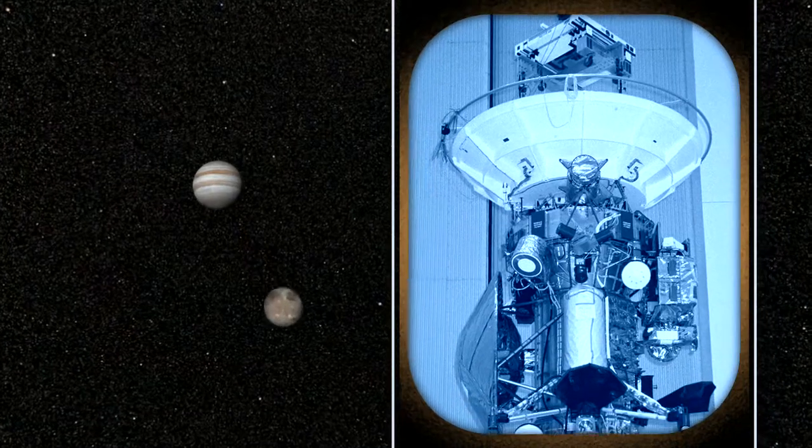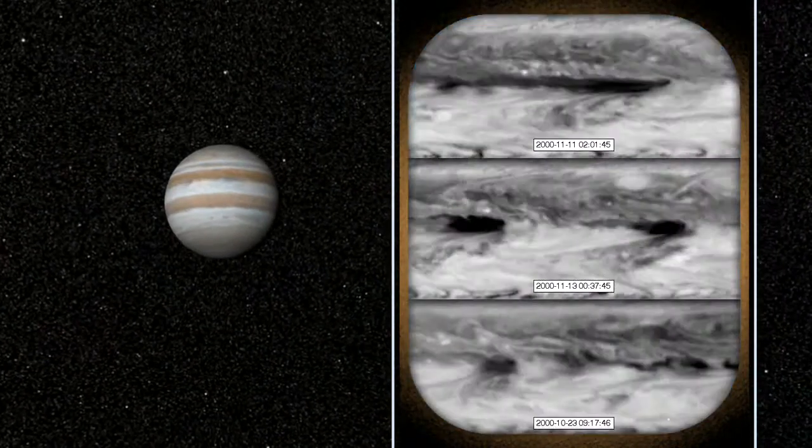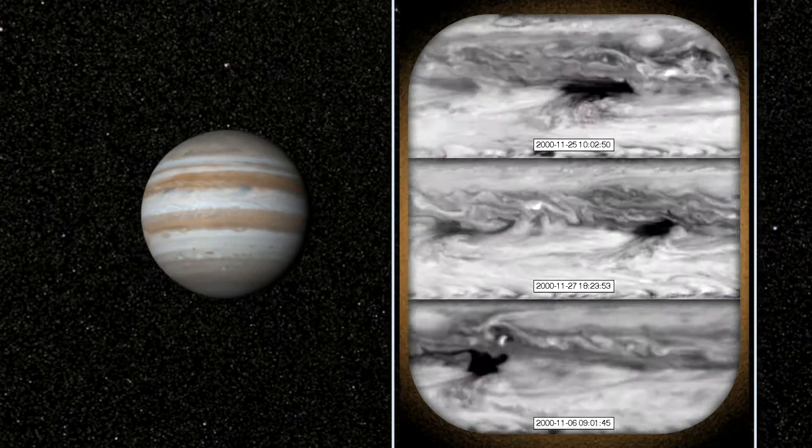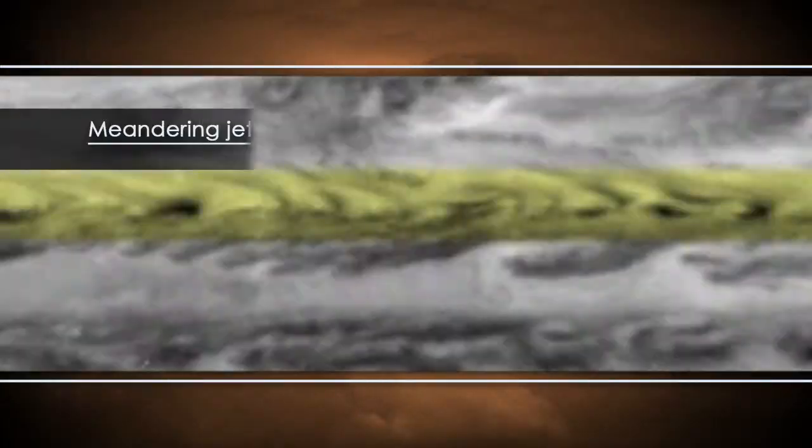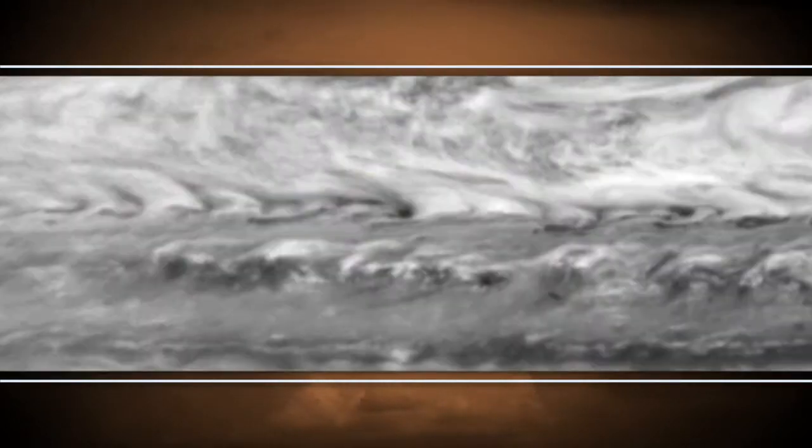In 2000, the Cassini spacecraft flew past Jupiter and created a series of still images that we compiled into time-lapse movies of Jupiter's atmosphere. Using these movies, we observed Rossby waves that cause north-south meanders in a jet stream south of the equator.